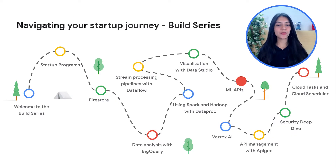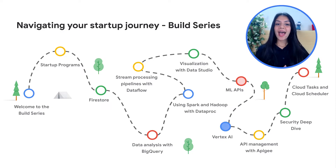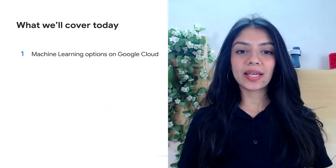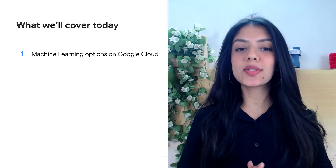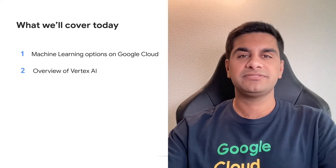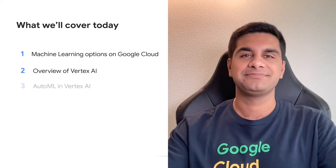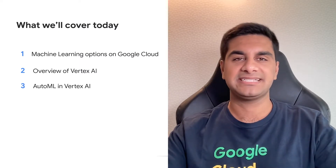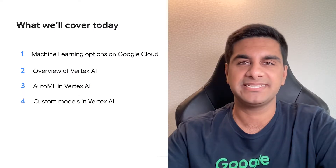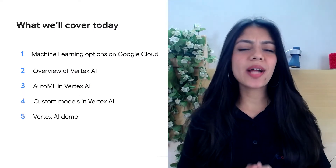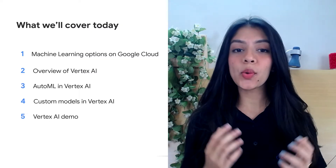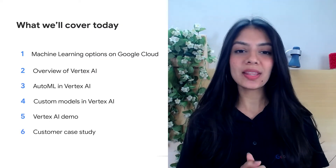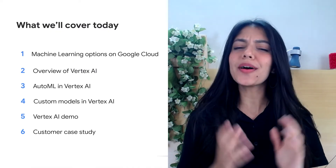In our previous video, we talked about machine learning APIs, which is a subsection of all the machine learning offerings of Google Cloud. Today we are going to dive a little bit more on the machine learning side of things. We'll start by looking at the four broad categories of ML offerings on Google Cloud, then understand the Vertex AI platform, AutoML and custom modeling in Vertex AI, a hands-on demonstration, and how Vertex AI benefited one of our many customers.